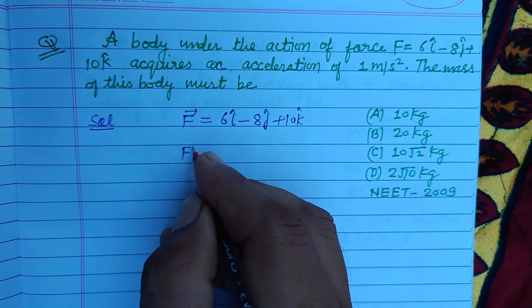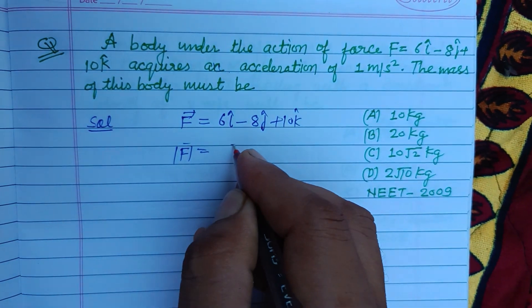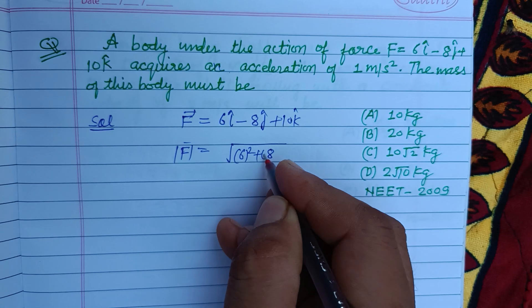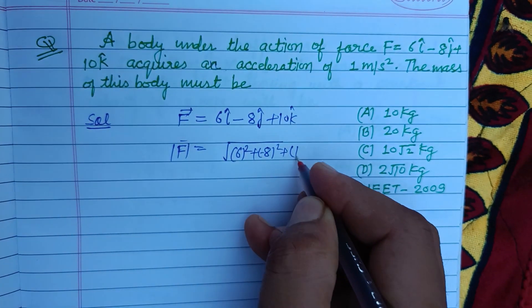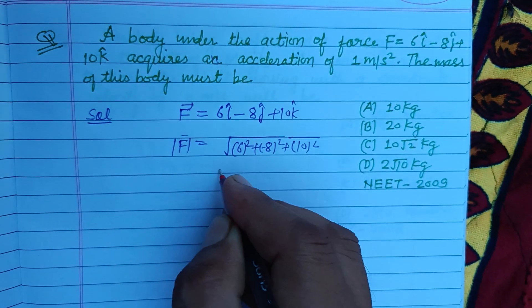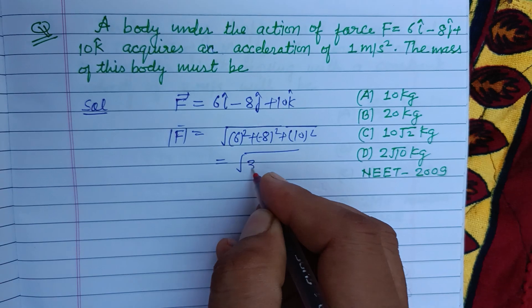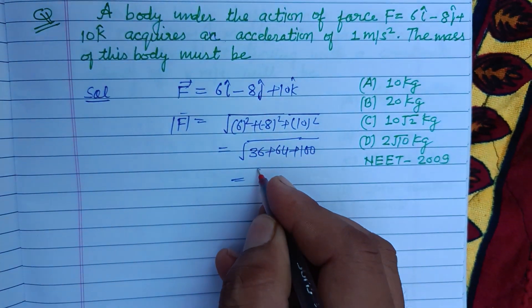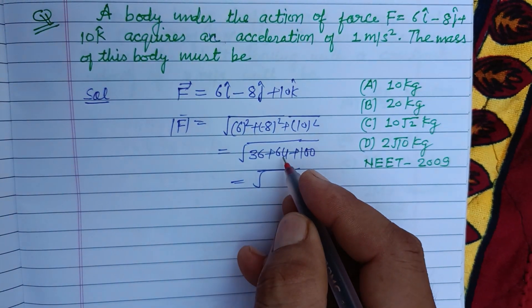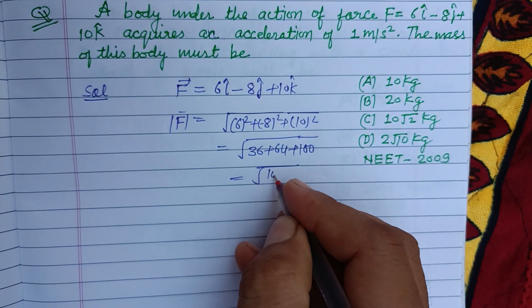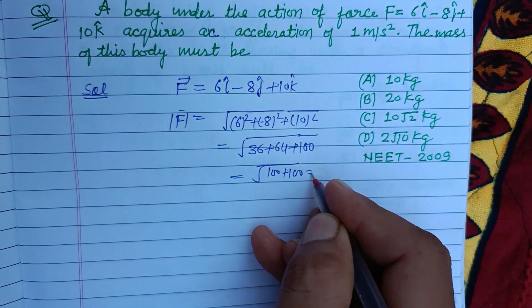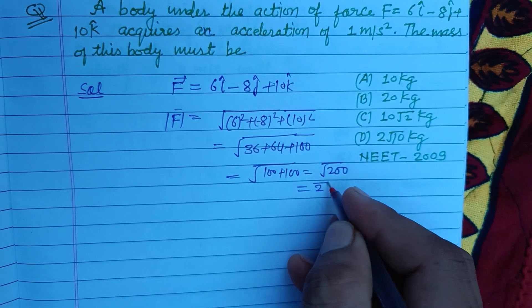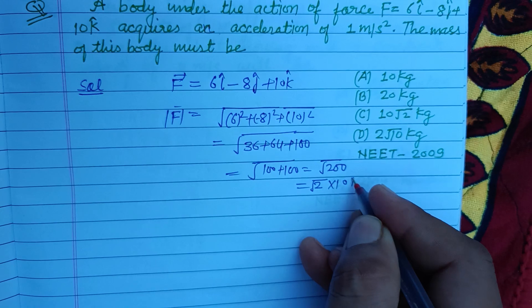So magnitude of this force is under root 6 squared minus 8 squared plus 10 squared. That is 36, 64 plus 100, so this is 100 plus 100, that is 200, or 2 times root 2 times 10, which equals 10 root 2 newtons.